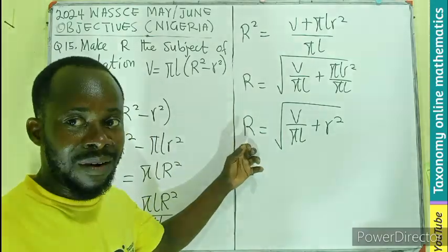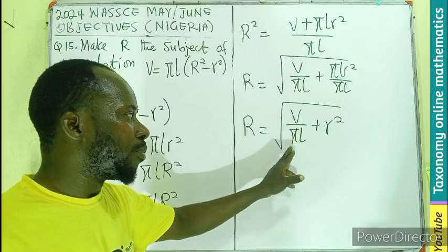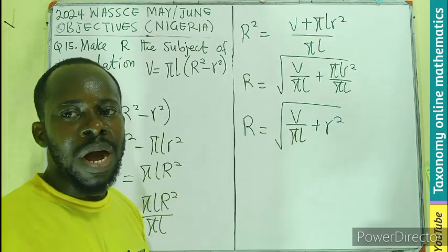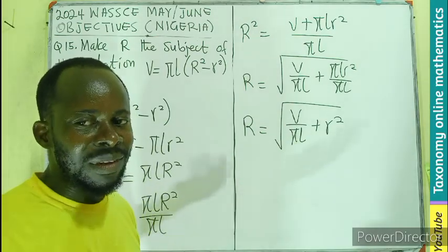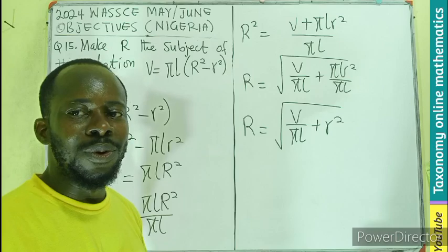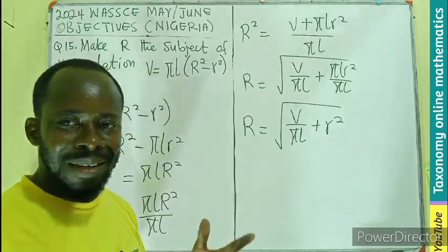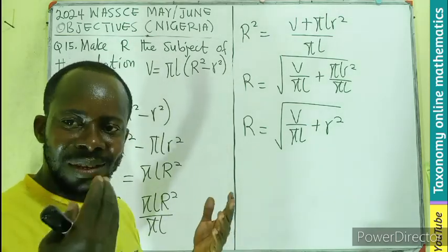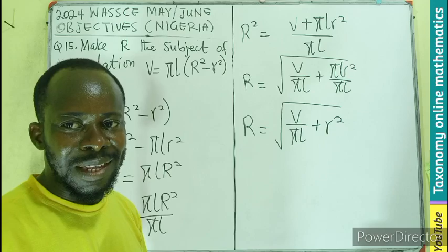That becomes the expression of capital R in terms of V, π, L, and small r square. I guess the concept is clear. Don't forget to share this video with the targeted audience, leave your comments, subscribe, and let's keep learning.